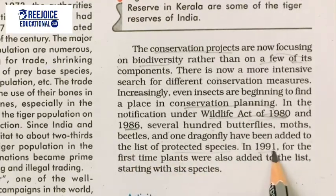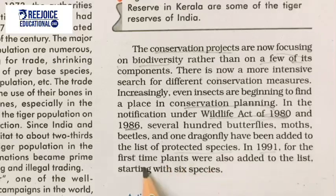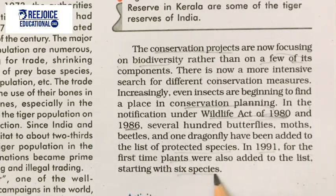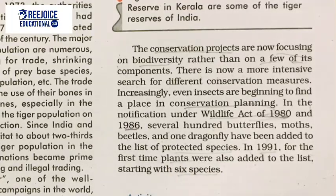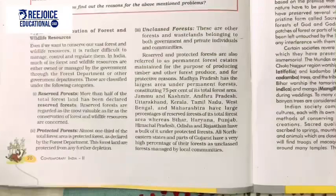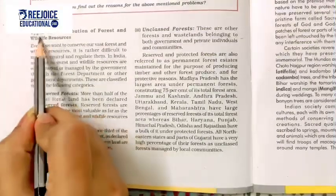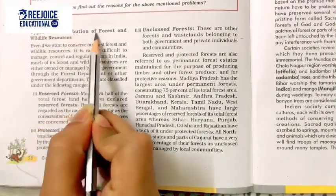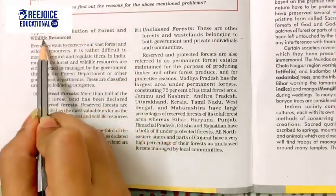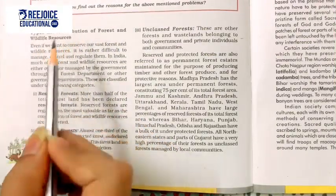In 1991, for the first time, plants were also added to the protected species list, starting with six species. This brings us to the topic of Types and Distribution of Forest and Wildlife Resources.